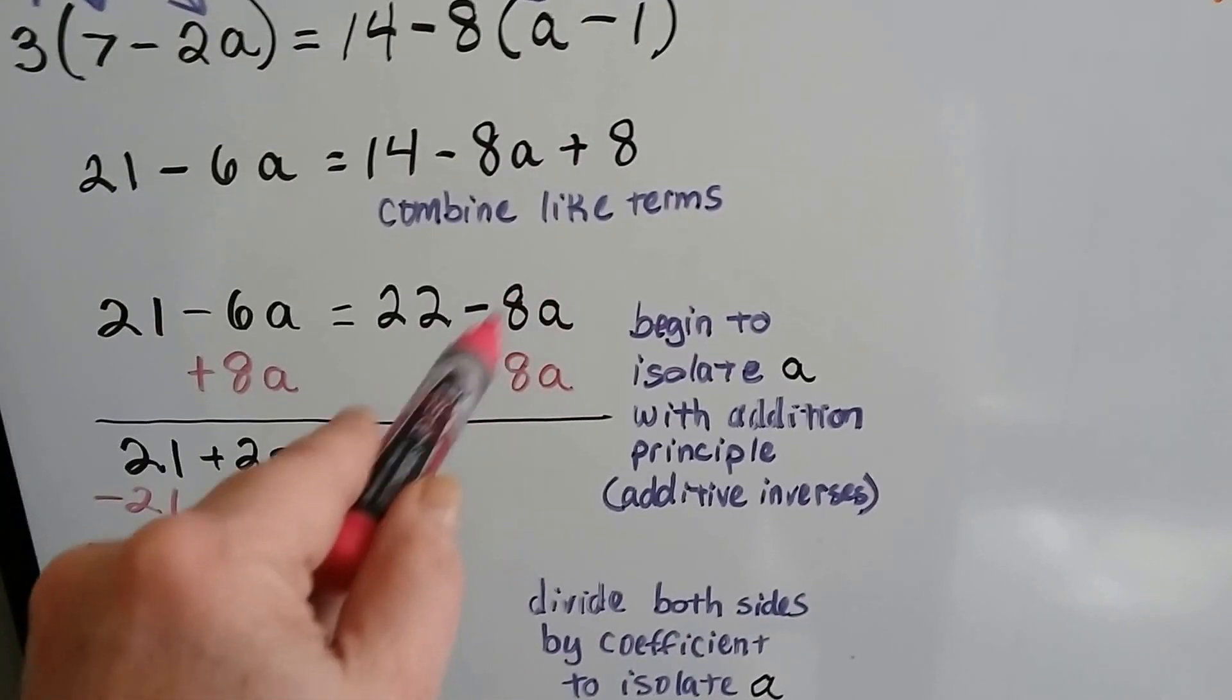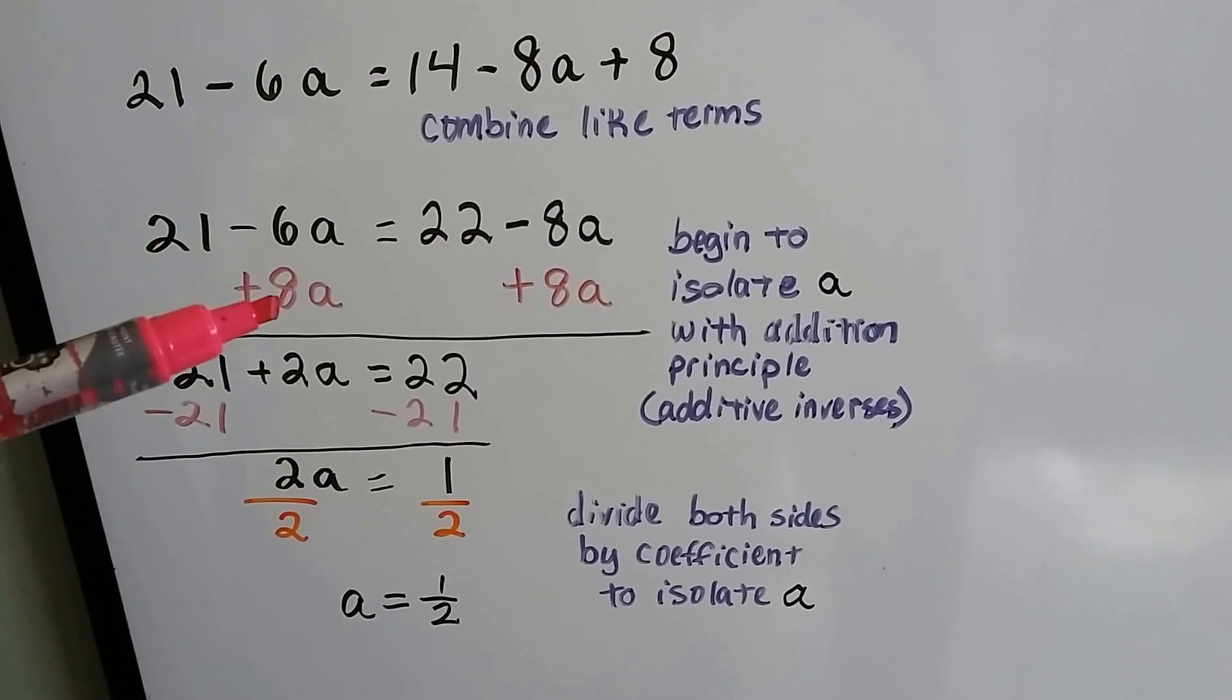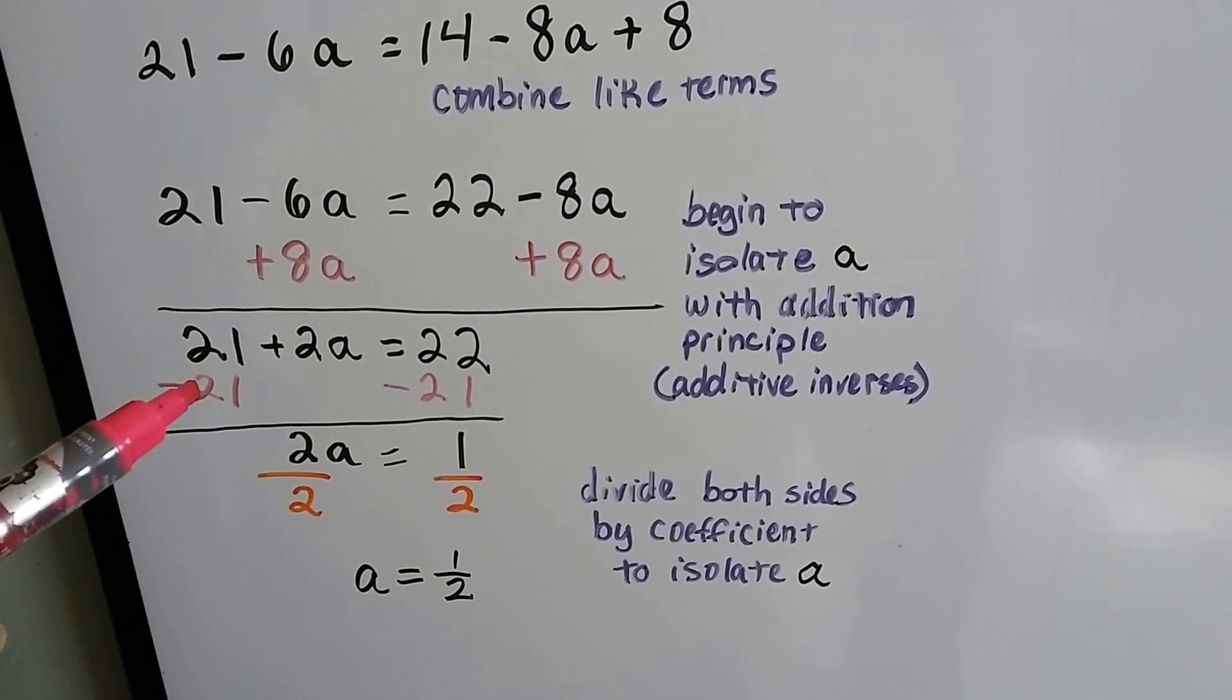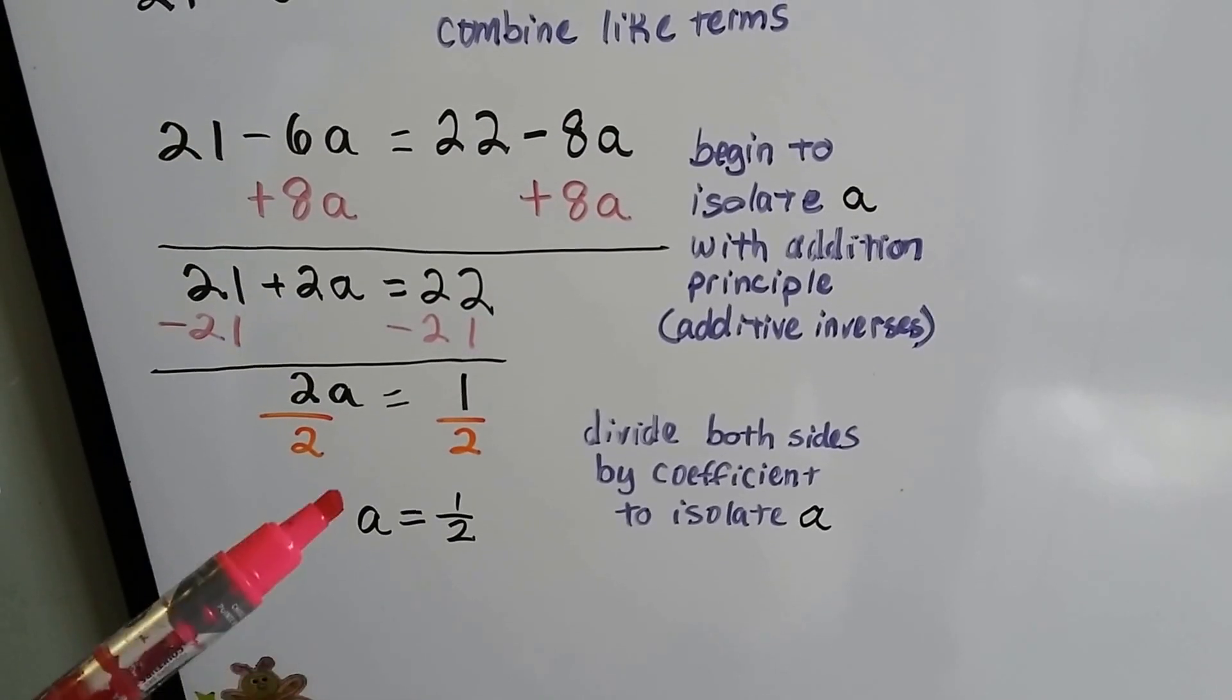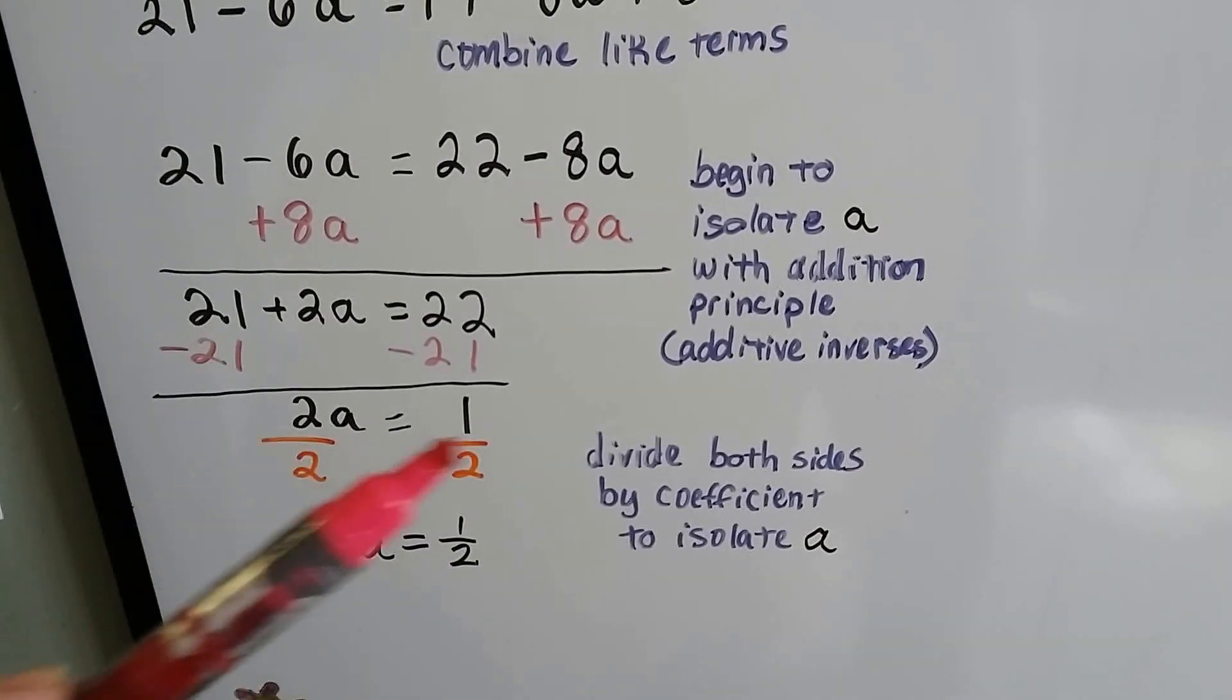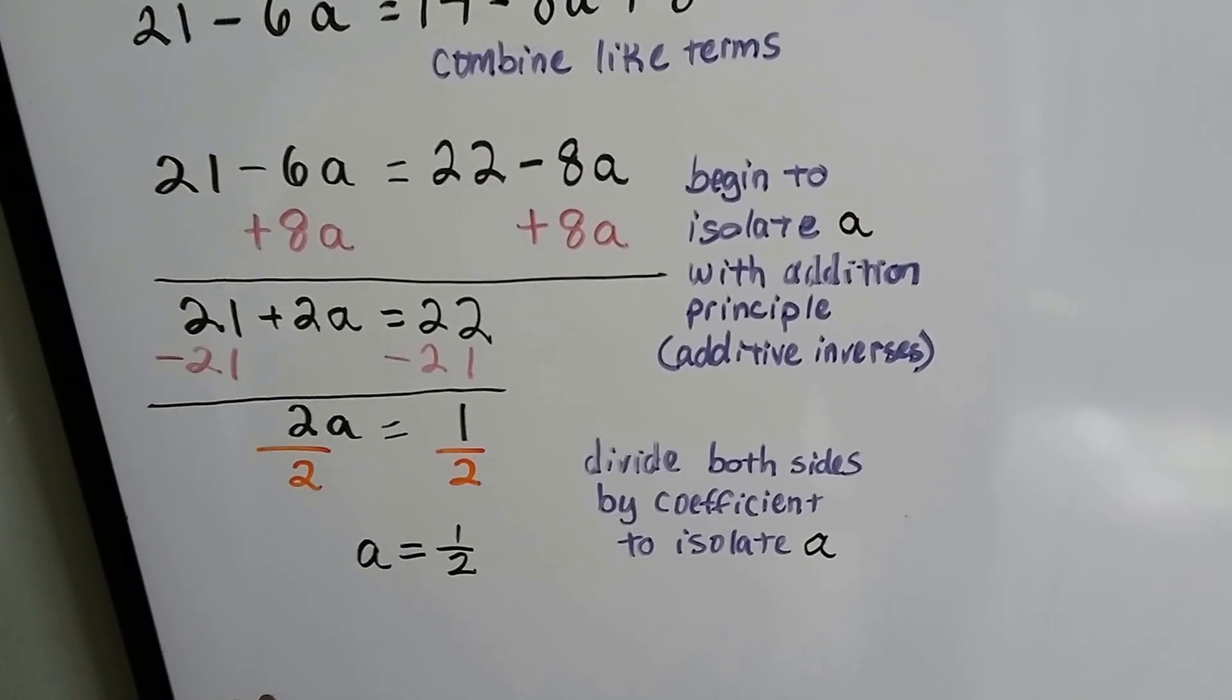So we add it to this side also. Negative 6a plus an 8a gives us a positive 2a. Now we can take away this 21 and take away 21 from that side, and what we're left with is that a is equal to a half. Divided both sides by this coefficient 2, and we got that a is equal to a half.